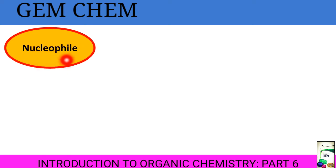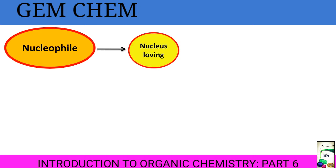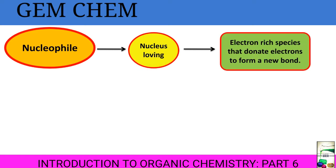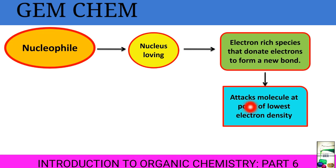Now, nucleophile — from this word we can understand there is some link with the word nucleus, because nucleophile refers basically to a nucleus-loving species, that is, the species which loves to get attracted towards a positively charged species. It is an electron-rich species that donates electrons to form a new bond. It attacks at that point of the molecule where the electron density is the lowest.